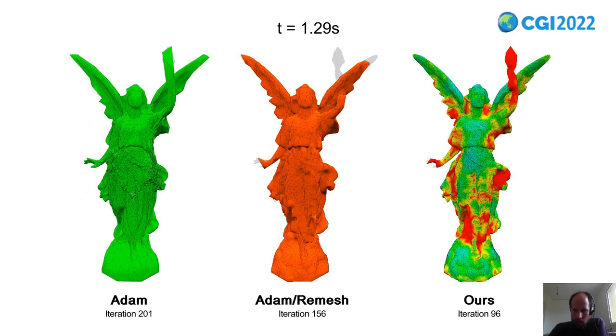This is a video of the comparison. And you can see, after one second, the baseline methods are working on large triangles. And at the same time, our method already uses small triangles to add fine details.